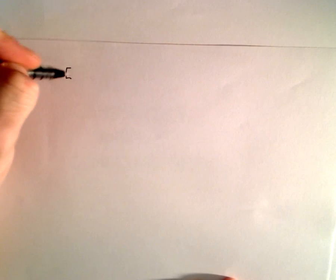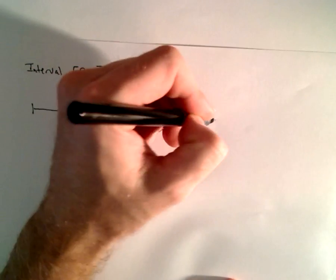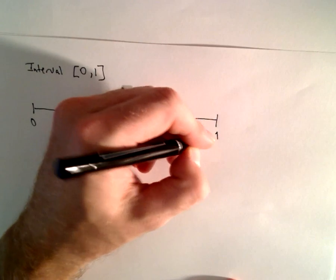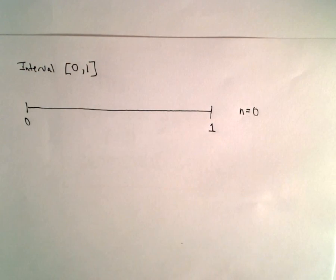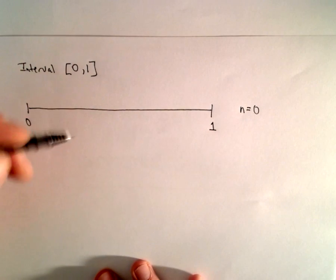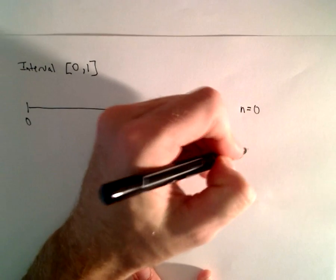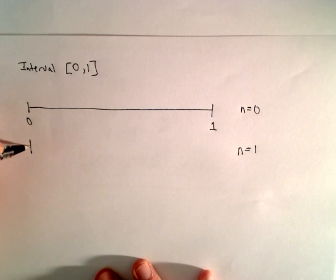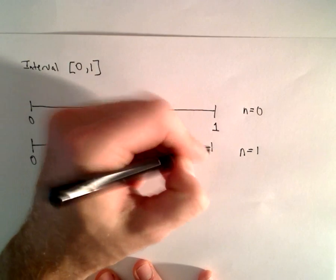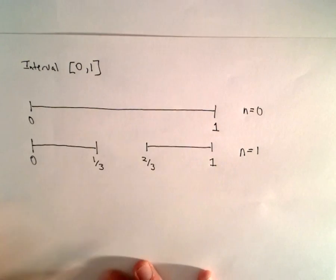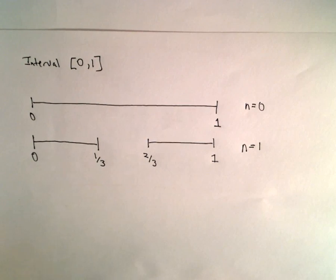You're probably saying, why is this so mind-blowing? To construct the Cantor set, we'll start with the closed interval zero to one — I'm just going to draw it like a line, so there's zero and there's one. That's step zero; we haven't done anything yet. Then at n equals one, the first step, we remove the middle third, so we're left with zero to one-third and two-thirds to one.